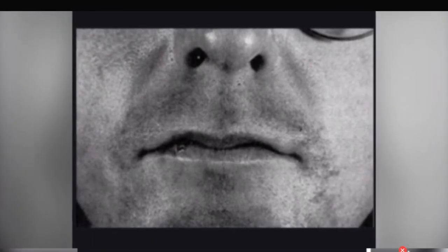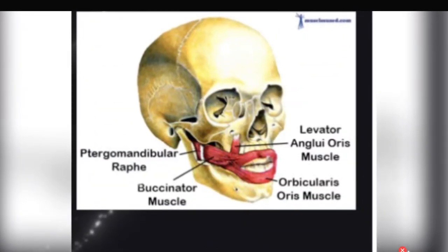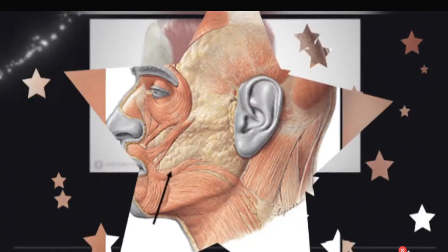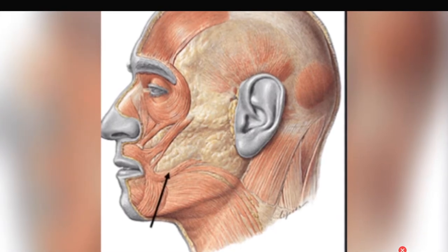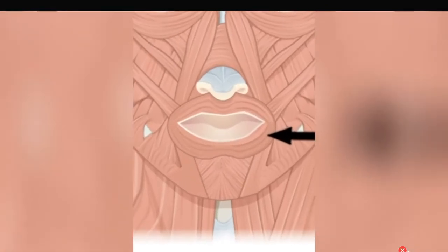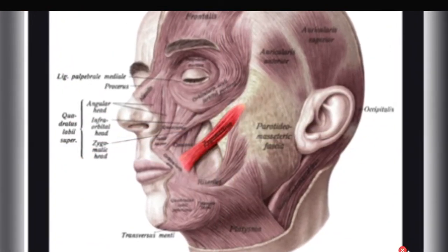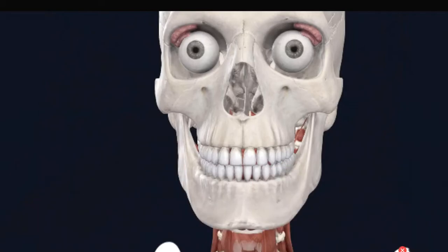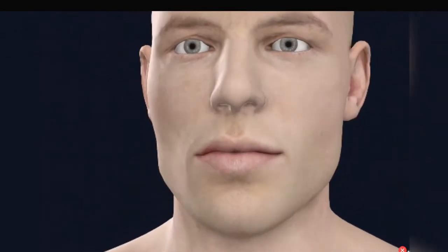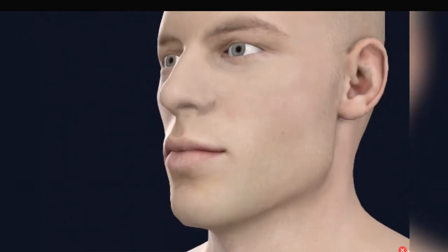The muscle inserts directly into the lips. Orbicularis oris controls the shape and movement of the lips — it closes and compresses them. Performing this action, orbicularis oris facilitates speech and helps in producing various facial expressions, such as anger, sadness, unhappiness, and more. The orbicularis oris is a complex sphincter that functions in conjunction with the muscles of facial expression.